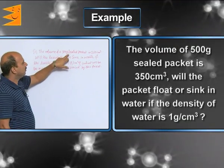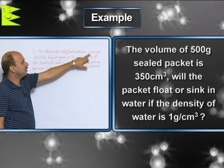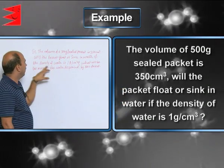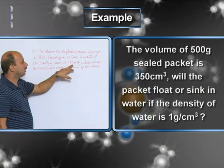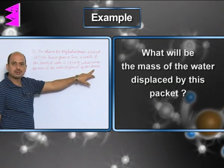Now see here, the volume of a 500 gram sealed packet is 350 centimeter cube. Will the packet float or sink in water if the density of water is 1 gram per centimeter cube? What will be the mass of the water displaced by this packet?